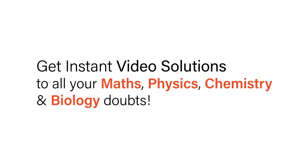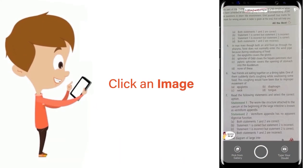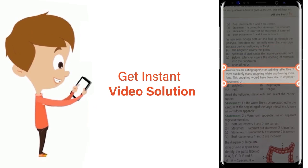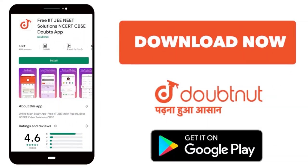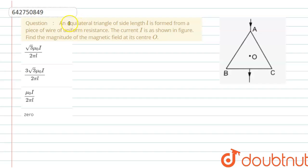With Doubtnet, get instant video solutions to all your maths, physics, chemistry, and biology doubts. Just click the image of the question, crop the question, and get instant video solution. Download Doubtnet app today. An equilateral triangle of side length L is formed from a piece of wire of uniform resistance.